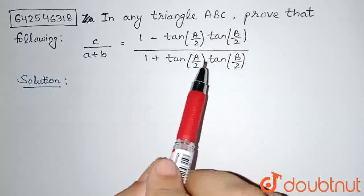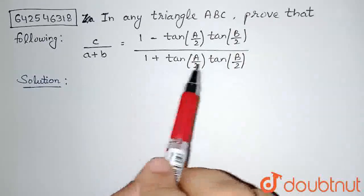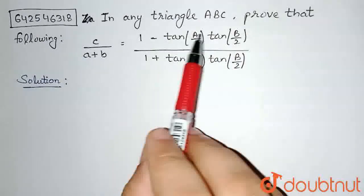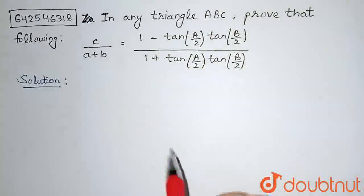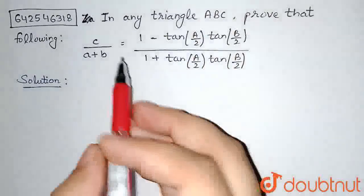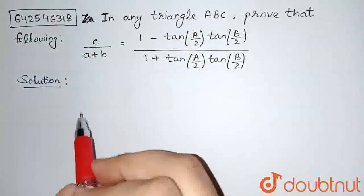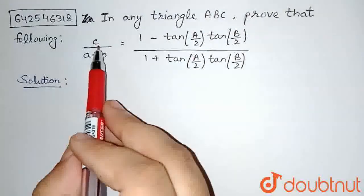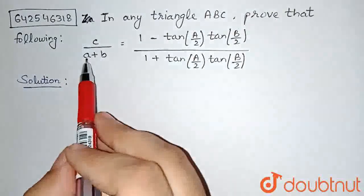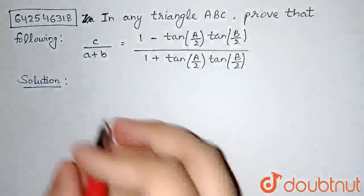In the question, we need to prove this expression for any triangle ABC. If I start with the LHS, I have small c, small a and small b.